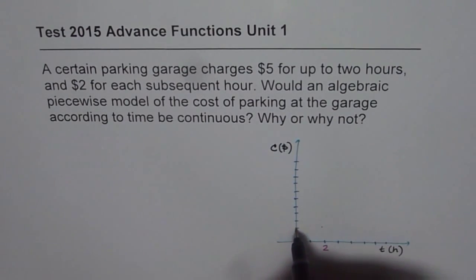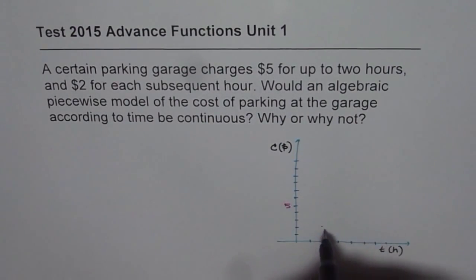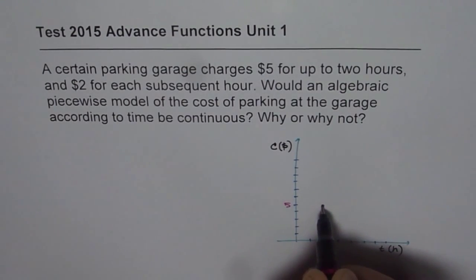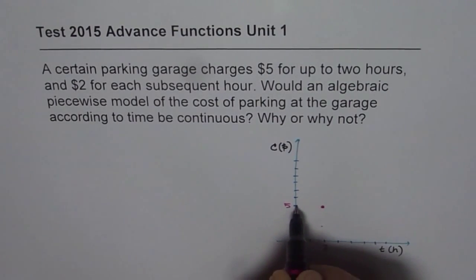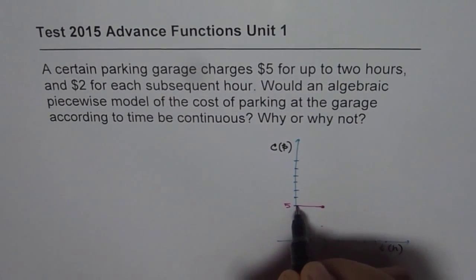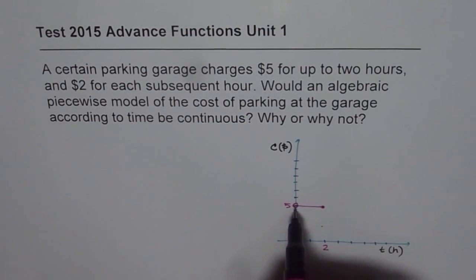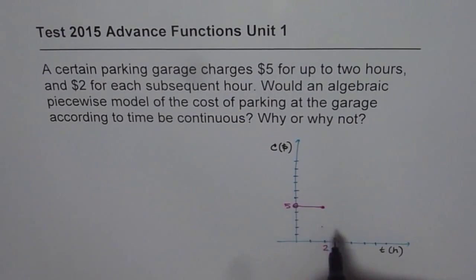So we mark 1, 2, 3, 4, 5 dollars on the vertical axis. Up to 2 hours it charges $5, so we draw a horizontal line up to that point. Of course, if the time is 0 you pay $0, so that point is not included, but 2 hours is included.